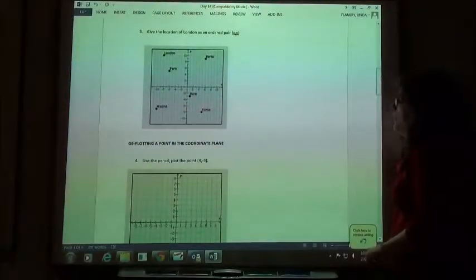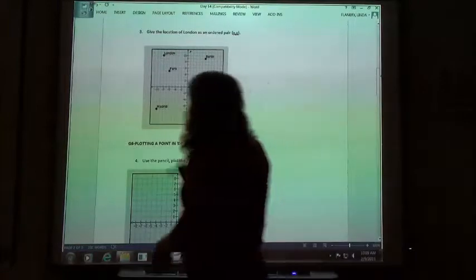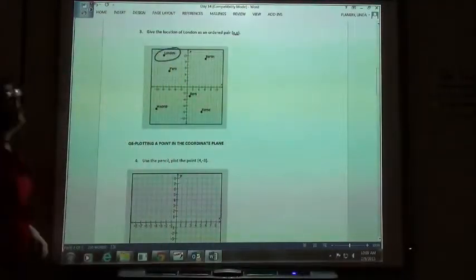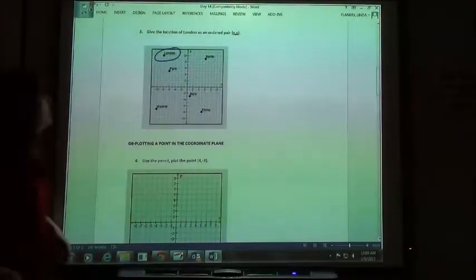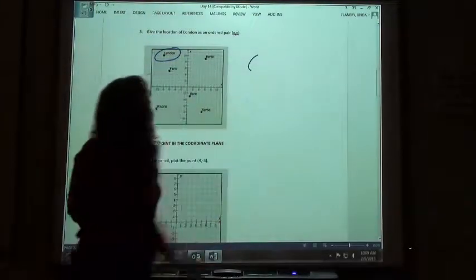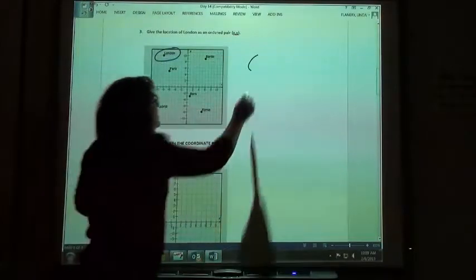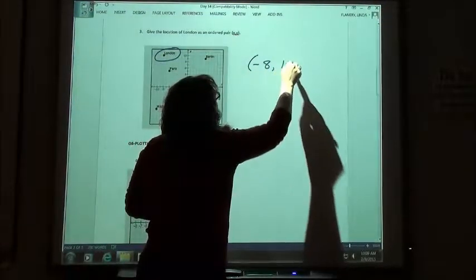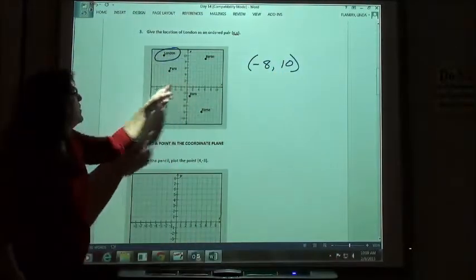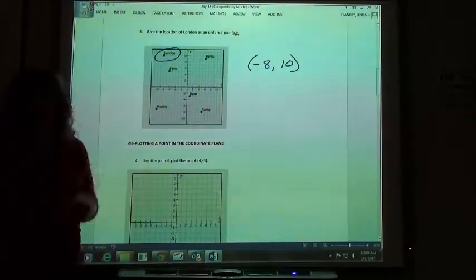Number 3, if I want to give the location of London, London's way up here in quadrant 2. My x-direction would be negative 8, my y-direction 10. So negative 8, 10. If I went to the left 8 and up 10, I land in London.